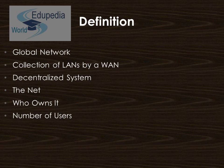Simply, we can say that the internet is a collection of local area networks connected by a wide area network, where local area networks are privately owned networks within a single building or campus of up to a few kilometers in size, whereas a wide area network spans a large geographical area, often a country or a continent. This is made possible by connection using standardized network devices and communication protocols, and the internet is formed when distinct networks are interconnected.